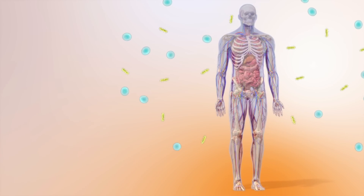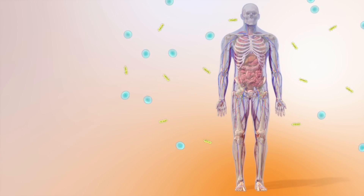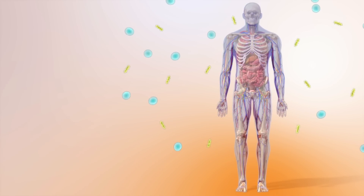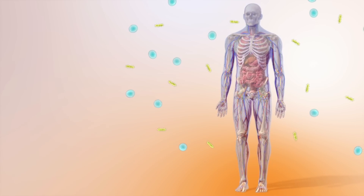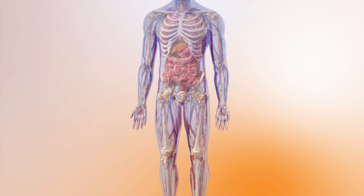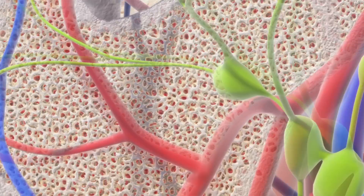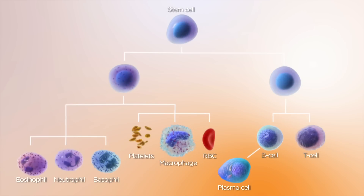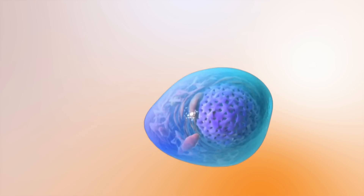Every day we're exposed to millions of germs, but our immune system keeps them at bay and protects us from infection and disease. White blood cells form an important part of the immune system. Different types work together to seek out and destroy germs that invade the body.